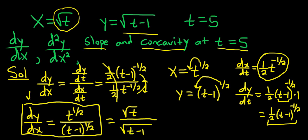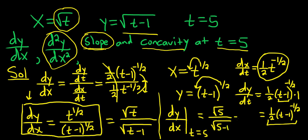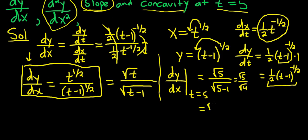We can go ahead and find the slope since we have the first derivative. So dy/dx at t equals 5 is equal to: plugging in 5, we get the square root of 5 over the square root of (5 minus 1). That's the square root of 5 over the square root of 4, and the square root of 4 is 2. So we end up with the square root of 5 over 2. This is the slope of the parametric equations at t equals 5.